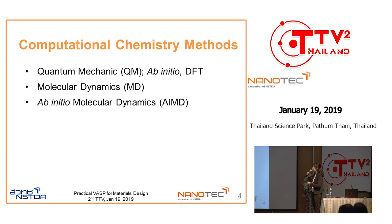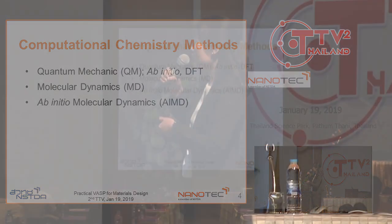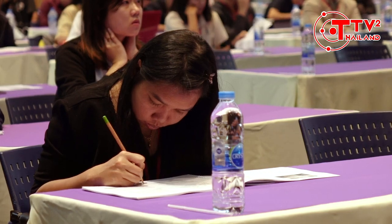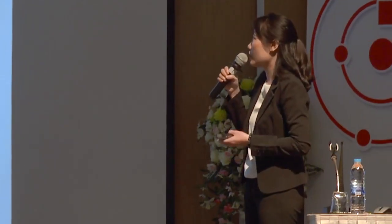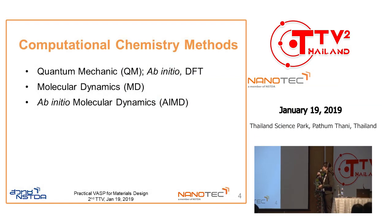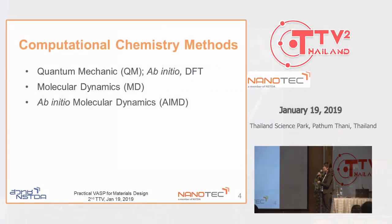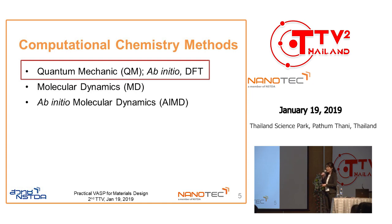I would like to introduce three of the main approaches used in molecular simulation, particularly in computational chemistry. The first one, which many of you have been using, is quantum mechanics. I'll go through ab initio calculation, DFT calculation, and molecular dynamics. The last one is the hybrid method between ab initio and molecular dynamics, or AIMD. Let's start with the first one: quantum mechanics.